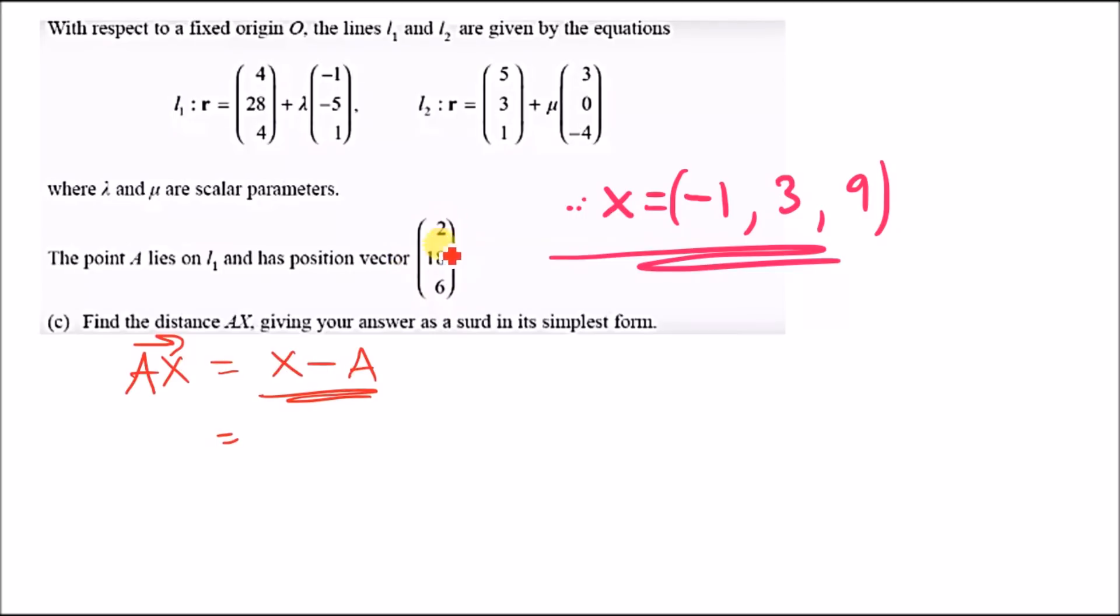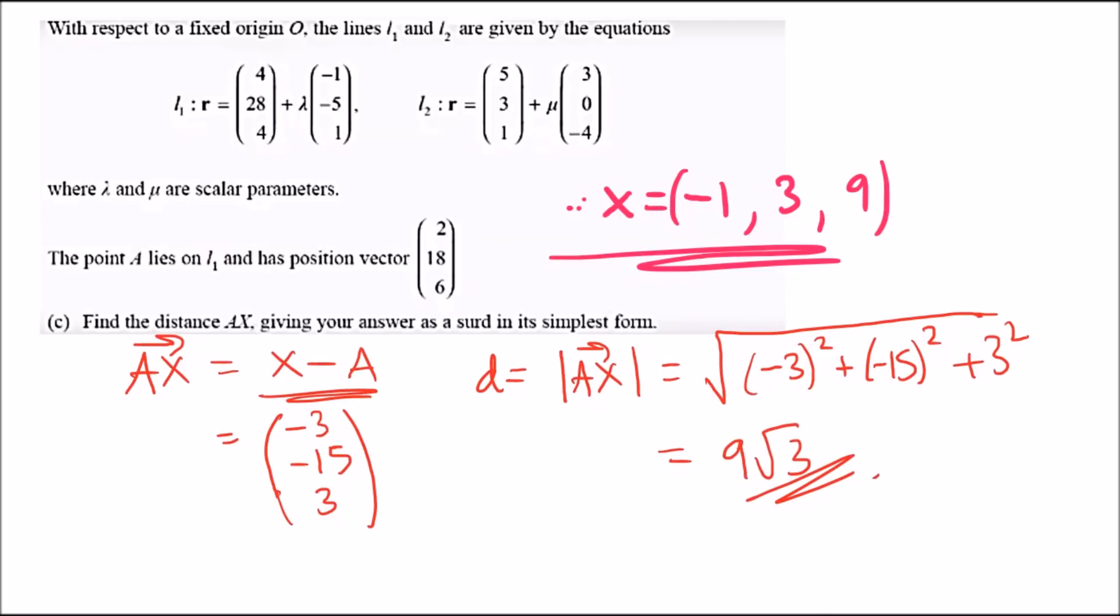We consider both points: A is given as 2, 18, and 6, and X is minus 1, 3, and 9. Subtracting, we get minus 1 take away 2 gives minus 3, 3 take away 18 is negative 15, and 9 take away 6 is positive 3. The distance is the magnitude of AX using 3D Pythagoras: square root of minus 3 squared plus minus 15 squared plus 3 squared, which gives 9 root 3.